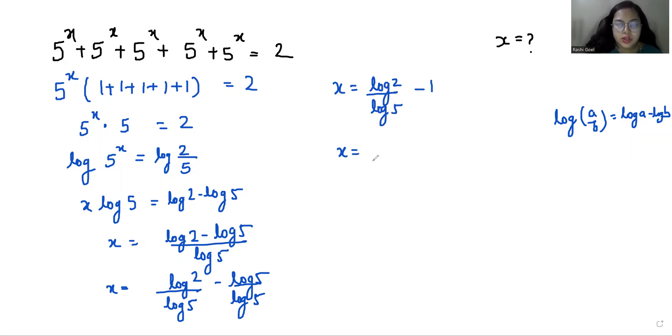So x equals... the value of log 2 is 0.3010 and log 5 is 0.6990, so we have 0.3010 / 0.6990 minus 1. So x equals 0.4306 minus 1. So x equals negative 0.5694. The value of x is negative 0.5694.